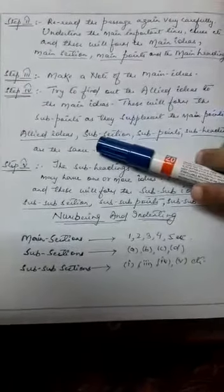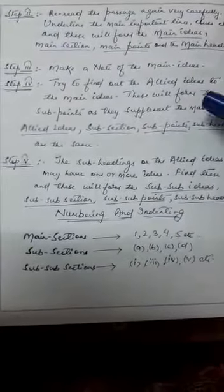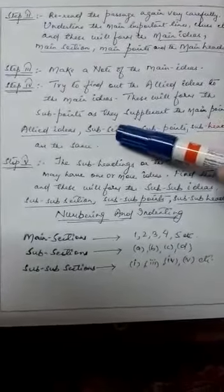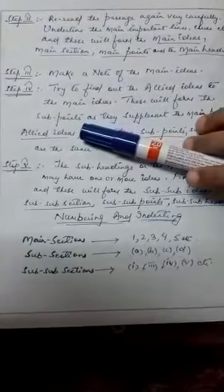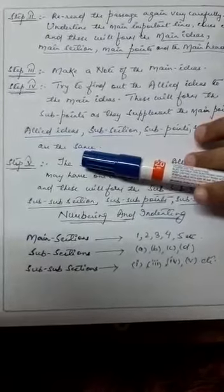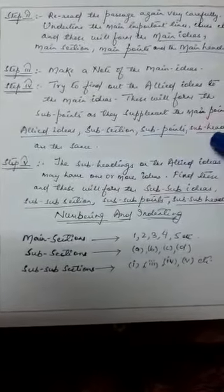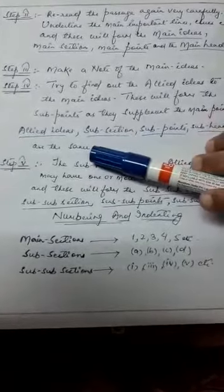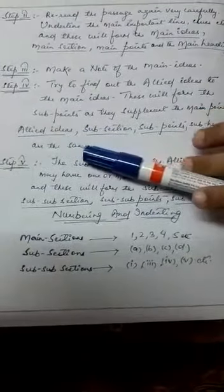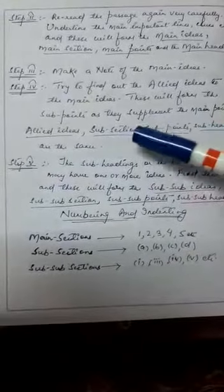So try to find out the allied ideas to the main ideas and these will form the sub points, the subsections as they supplement the main points. Those points are known as sub points because of that allied ideas or the subsections, the subpoints, the subheadings, they are all the same.